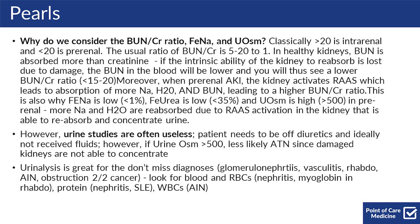Sending a urinalysis is great for the do-not-miss diagnoses including glomerulonephritis, vasculitis, rhabdomyolysis, AIN, and obstruction secondary to cancer. The things you should be able to look out for include blood and red blood cells to look for nephritis and myoglobin in rhabdo, protein for nephritis and lupus, and white blood cells for acute interstitial nephritis.